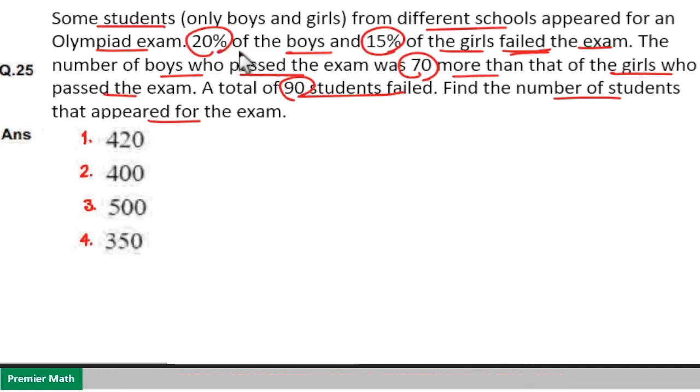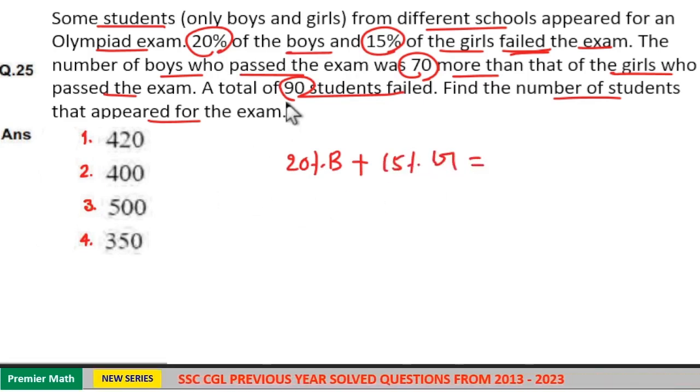Here, 20% of the boys plus 15% of the girls who failed the exam. Total number of students failed was 90. So, this is equal to 90.